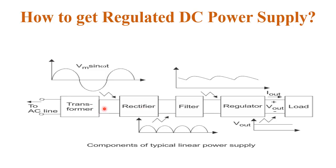The AC voltage output of the transformer is given to the rectifier. The rectifier is an AC to DC converter that converts AC input voltage into pulsating DC output voltage. That pulsating DC output voltage is given to the input of the filter. The filter is a device that removes ripples — the unwanted AC component present in the DC output of the rectifier. The filter passes the DC component and blocks the AC component. Filters are typically constructed from reactive circuit elements such as capacitors, inductors, and resistors.